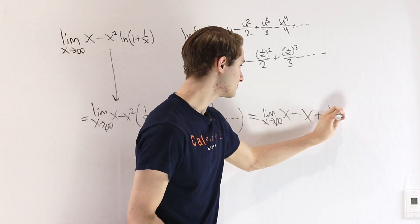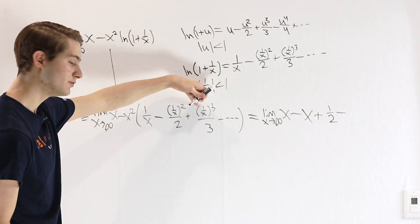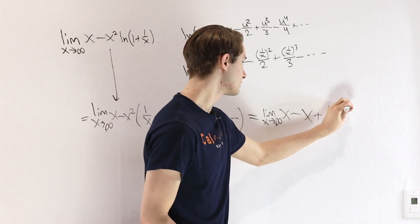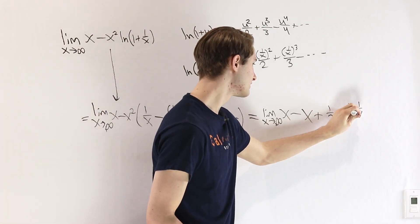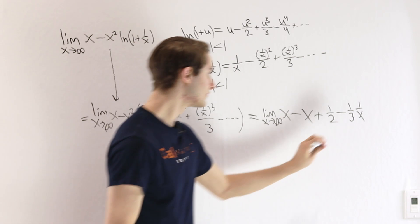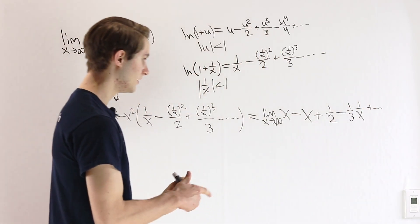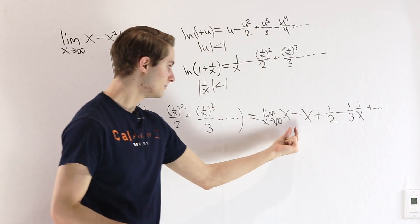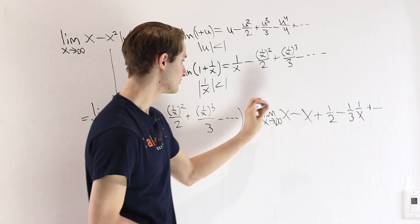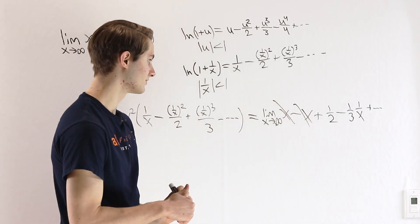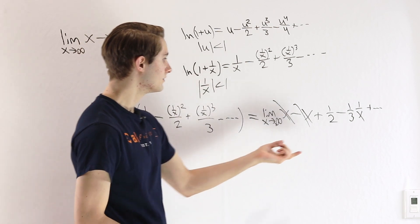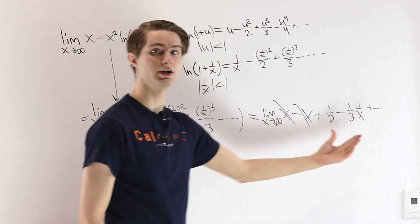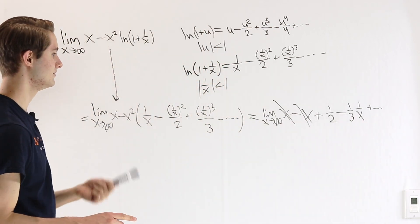After that, we'll subtract x squared over x cubed is going to be 1 over x. So that's our next term, and then we keep adding terms. Now notice, first of all, we have x minus x in the front. Those two are going to cancel out.